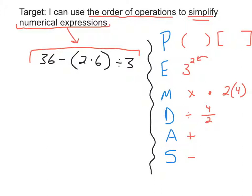For this problem right here, I could get several different answers, but only one is the correct answer. So we might remember PEMDAS. PEMDAS is an easy way to remember what order the operations come in. And it's also a good tool to use if you just write it down on your paper each time you have a complicated numerical expression, and use it as a checklist.